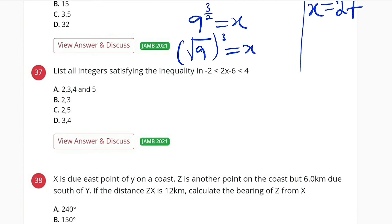Question number 37, we are almost done. List all the integers that satisfy the inequality -2 < 2x - 6 < 4.